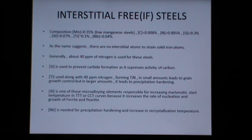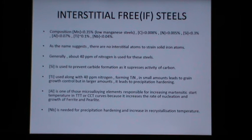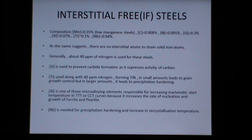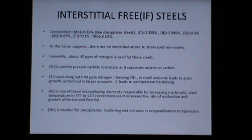Aluminium is responsible for increasing the martensitic start temperature in the TTT (time-temperature transformation), IT (isothermal transformation), and CCT (continuous cooling transformation) curves, because it increases the rate of nucleation and growth of ferrite and pearlite. Niobium is used for precipitation hardening and increasing the recrystallization temperature.